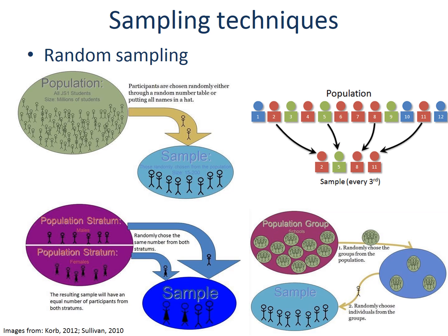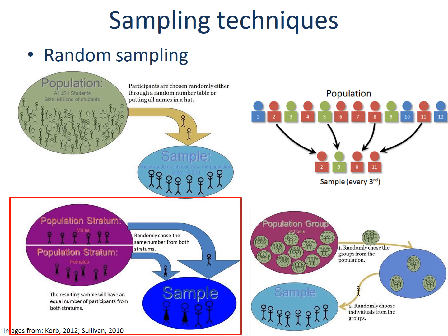On the other hand, stratified sampling allows you to recognize different characteristics of people in your sample. First, you separate the population into non-overlapping groups called strata — such as male and female, as shown in this example — and then obtain a simple random sample from each group.